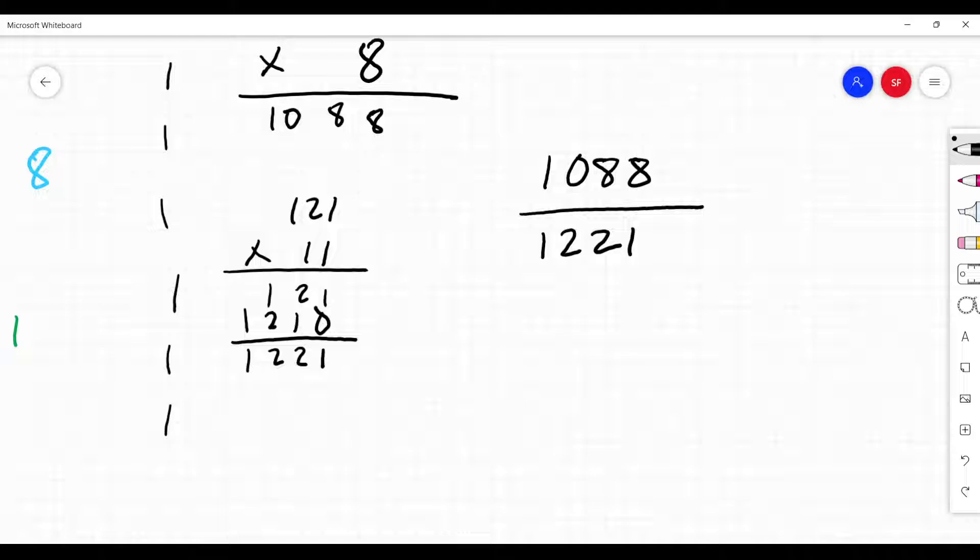2 plus 1 is 3. How about 3? I was just testing you. Good job. I'm so proud. So we have 1,088 over 1,331. Now, this reduces.